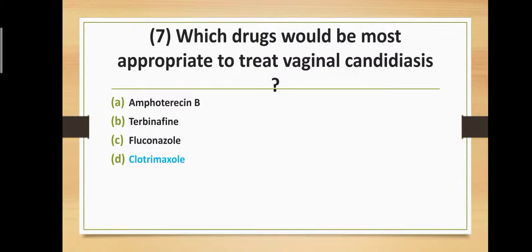Question number seven: Which drug would be most appropriate to treat vaginal candidiasis? Option A: amphotericin B, Option B: terbinafine, Option C: fluconazole, Option D: clotrimazole. The correct answer is Option D — clotrimazole is most appropriate to treat vaginal candidiasis.